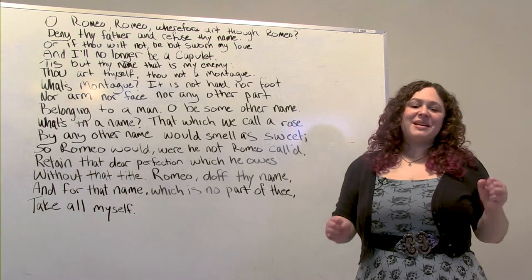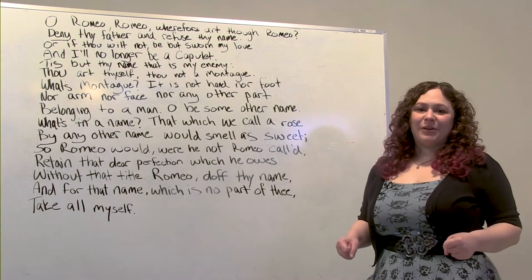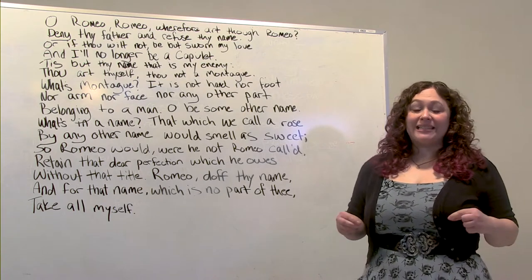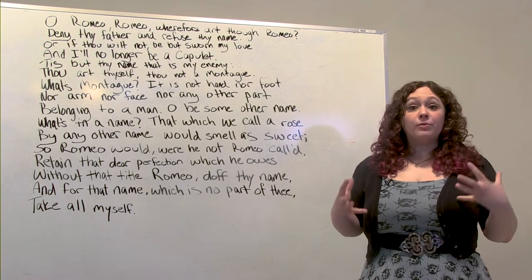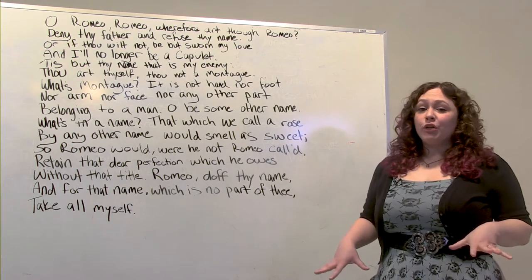Hi everyone! My name is Kim Douthit and today we're going to be looking at objectives using a soliloquy from Romeo and Juliet.